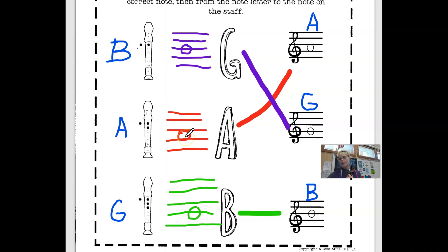An A is the second space up, and a G is the second line up. So remember the word bag, B-A-G, and that is your first three notes that you're going to learn on the recorder.